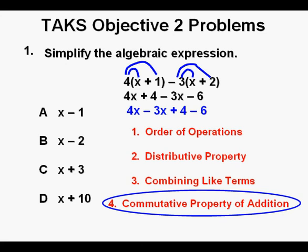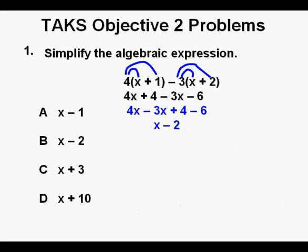Since 4x minus 3x equals 1x or x and 4 minus 6 equals negative 2, these simplify to x minus 2. And that is our answer, B.